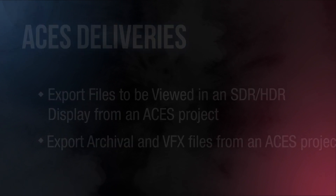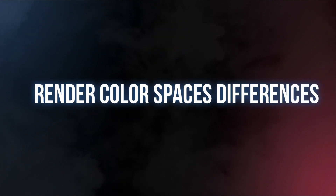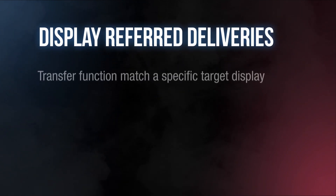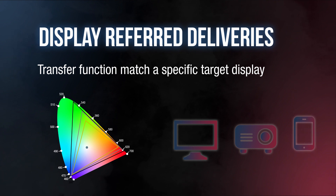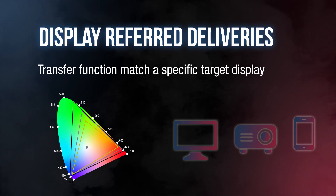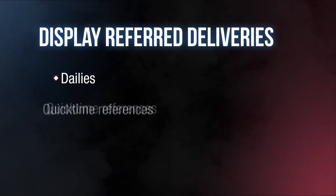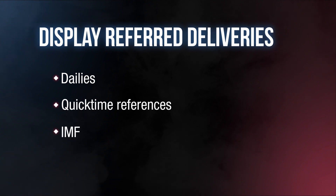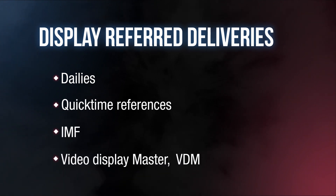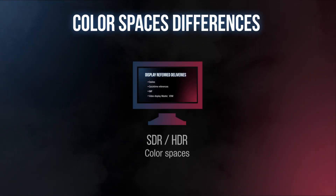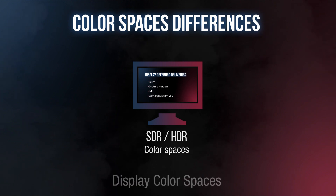What are the differences between scene-referred and display-referred? Display-referred deliveries is the name we give to those deliverables whose color space and transfer function match those of a specific target display, such as REC709-BT1886 or sRGB. Examples of display-referred images might be daily files for editing, QuickTime movies reference for review, IMF for broadcasting, or video display master. In all cases, they can be exported as HDR or SDR, depending on the mastering and target display.